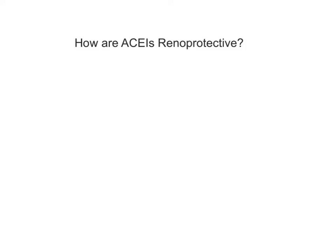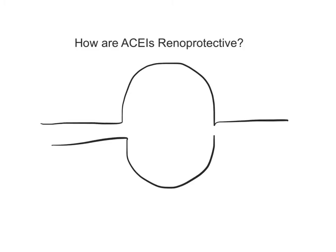We'll start off with a picture of the glomerulus, and you have the afferent and you have the efferent arteriole. Angiotensin II works here at the efferent arteriole.